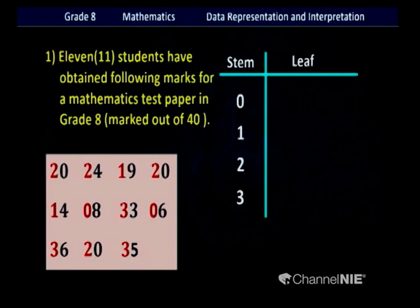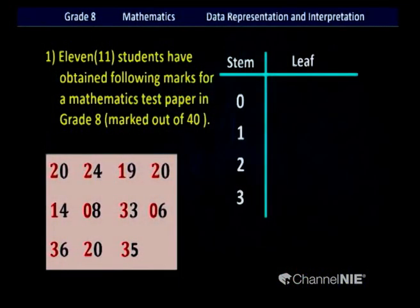The digit on the ones place should be written under leaf. We will start with the first one: 20. We have to mention it under 20s — look at stem side for 2, and in front of that put 0 under the leaf. Then we have 24 — it also belongs to 20s, so I have to mention 4 near the 0.